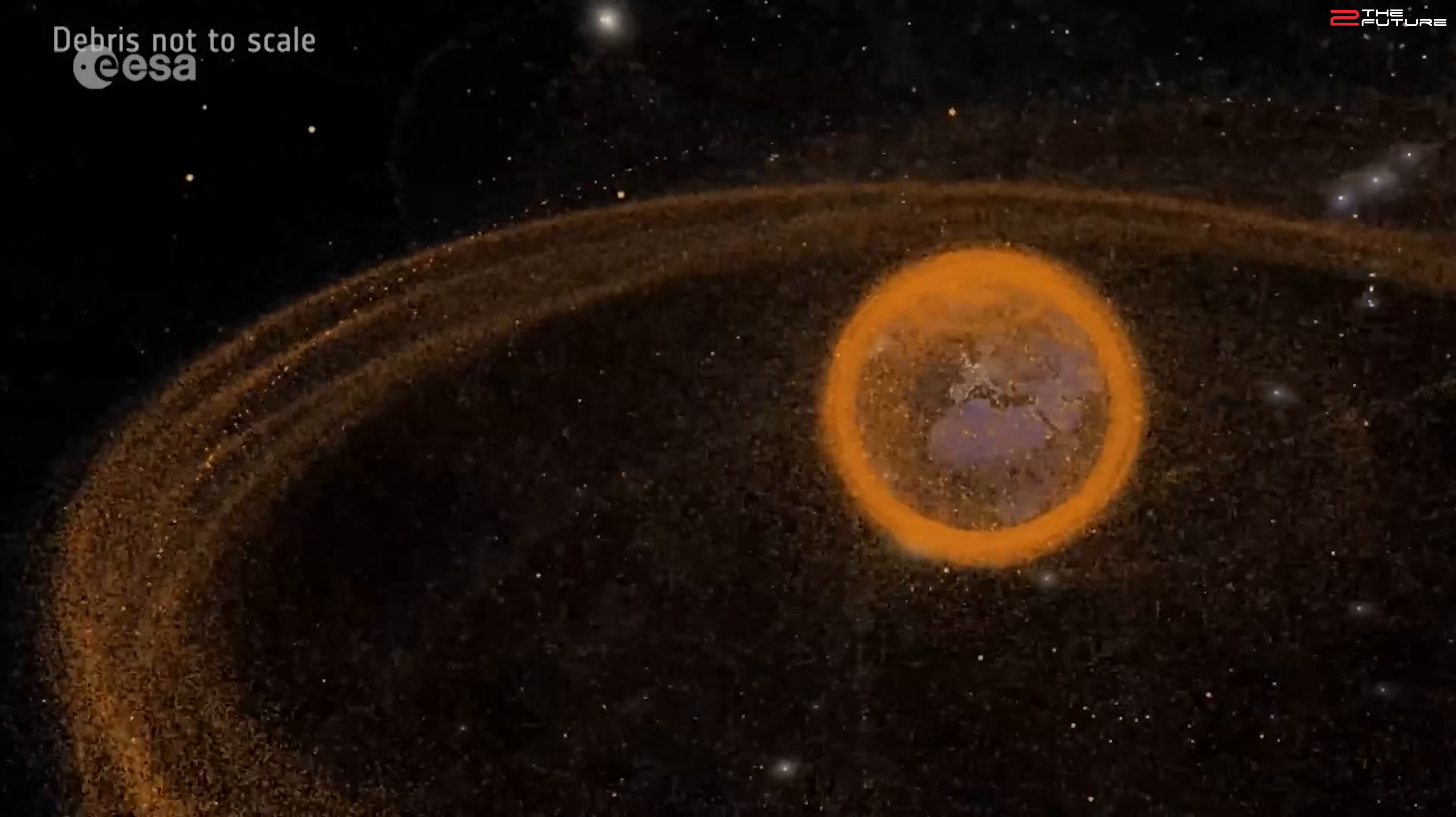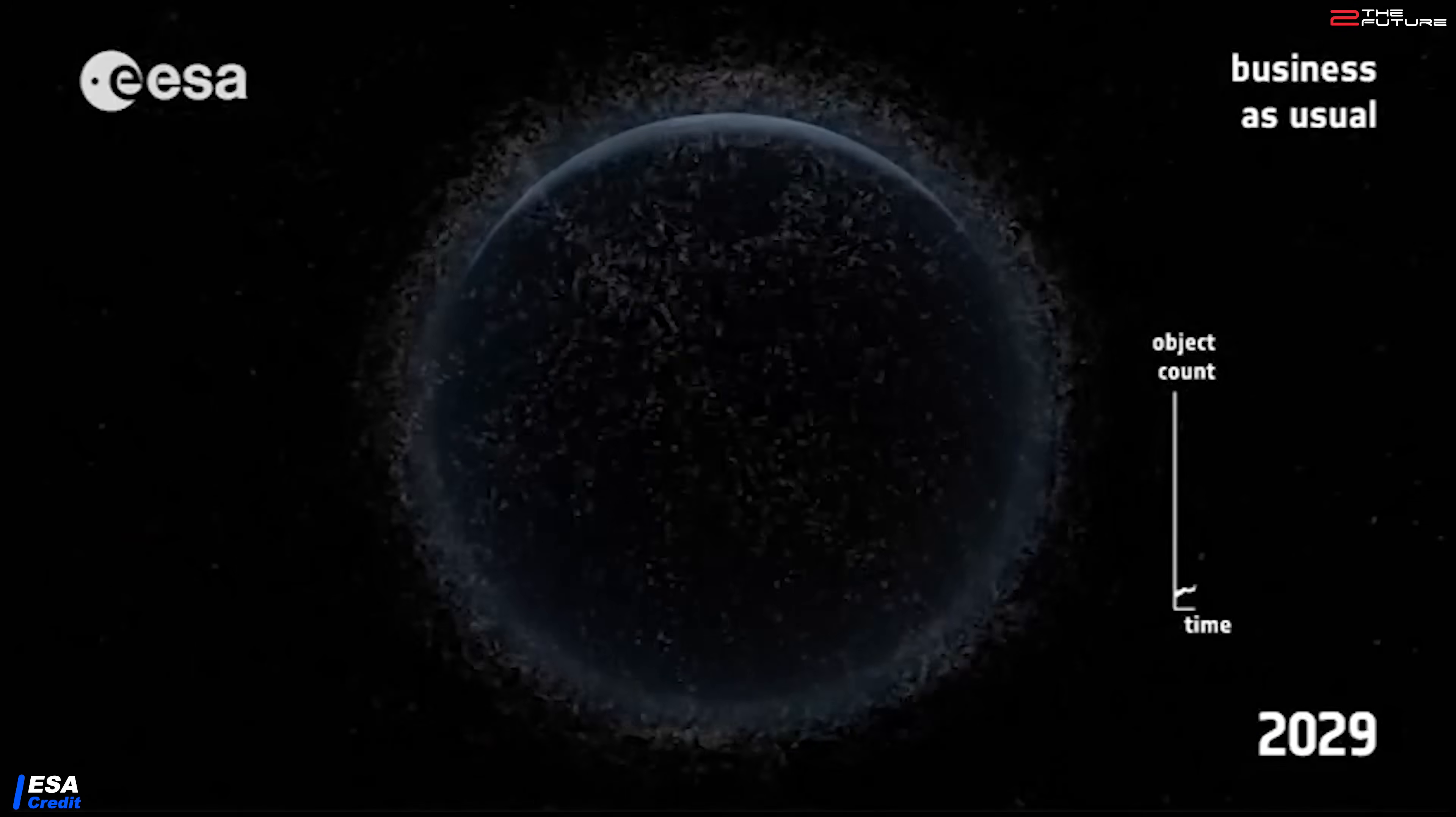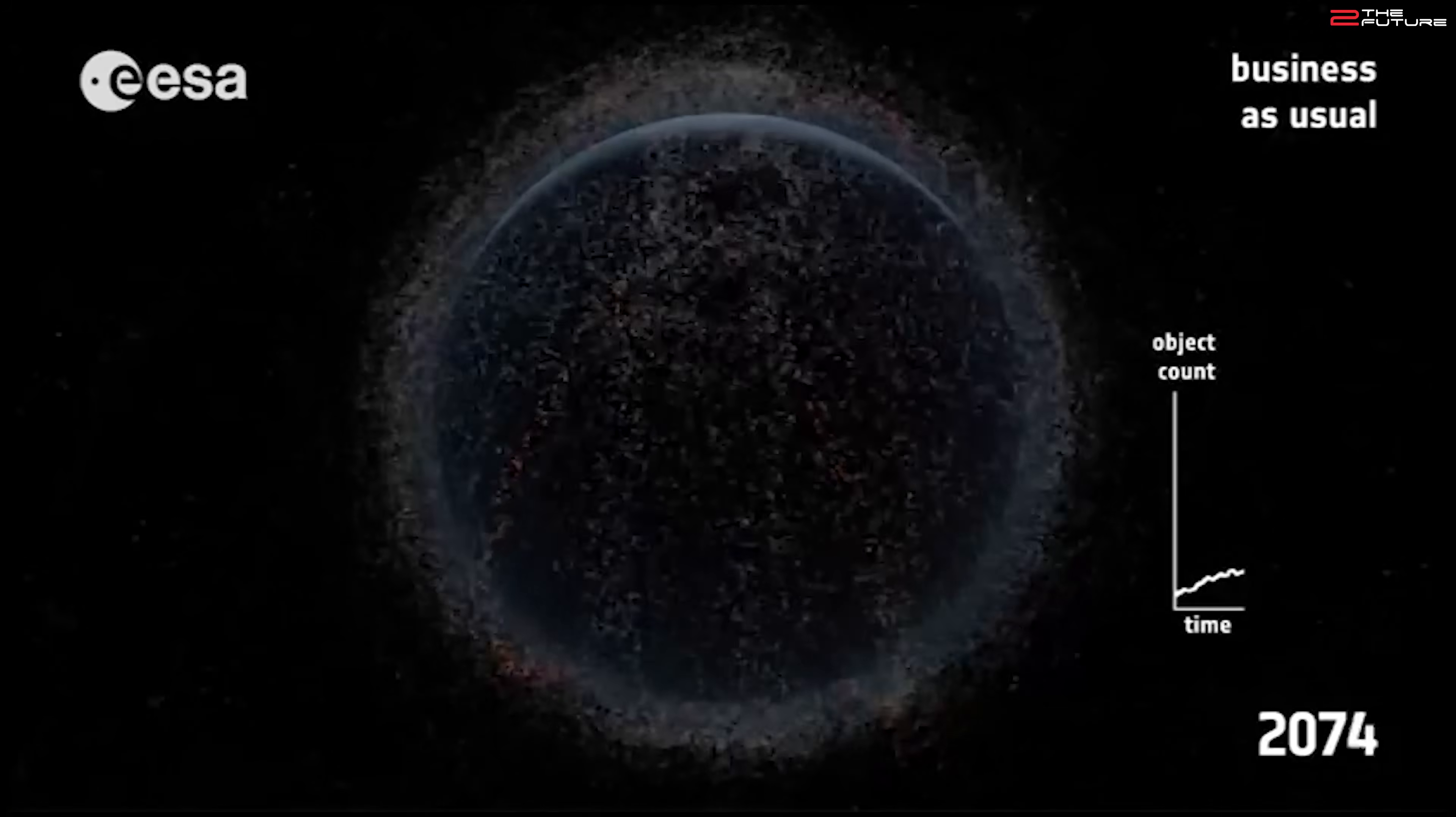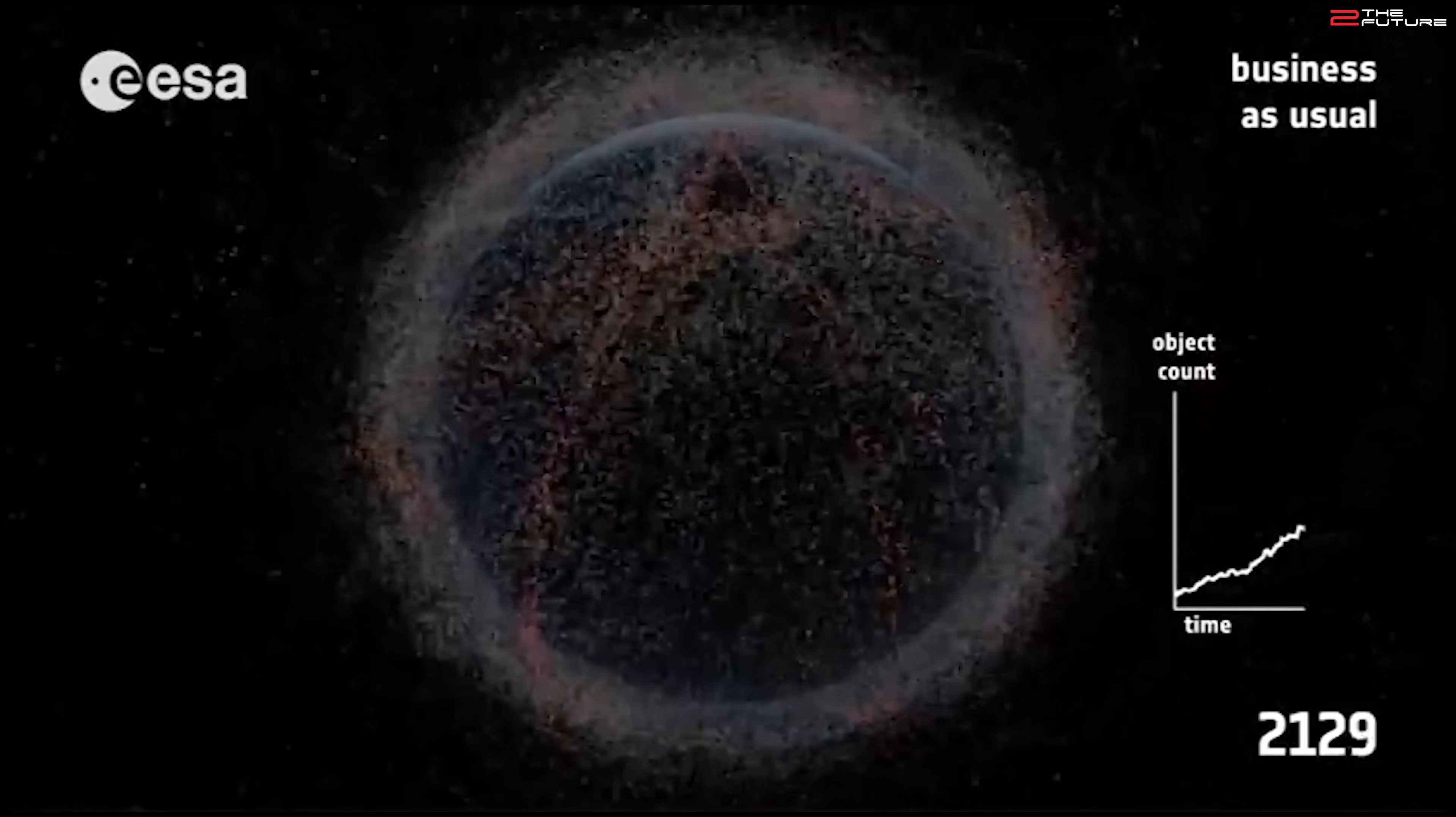These anti-satellite missile tests are just pure stupidity, because it will just get harder and more dangerous to get to low Earth orbit for every nation, even for the Russians themselves. In fact, as a precautionary measure, astronauts aboard the ISS (and that also includes Russian cosmonauts) were ordered to take shelter for a few Earth revolutions until NASA was sure that no debris from the destroyed satellite would hit the ISS.